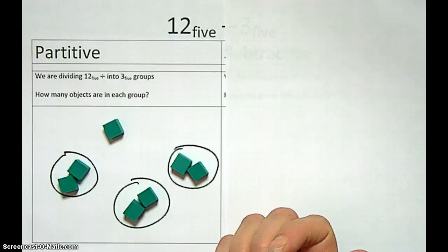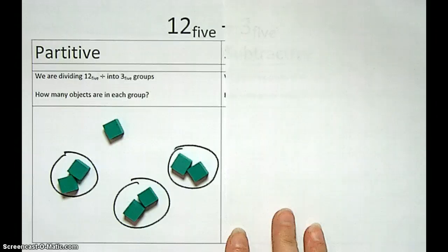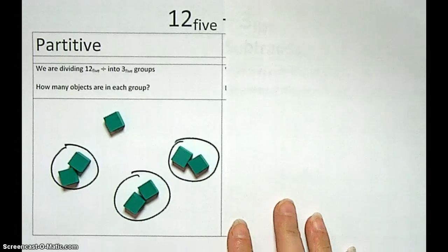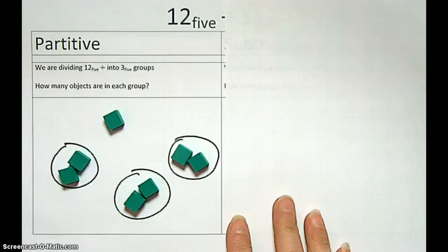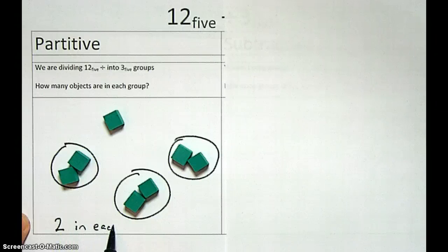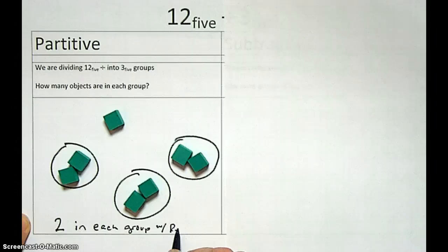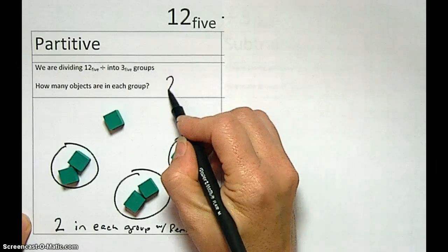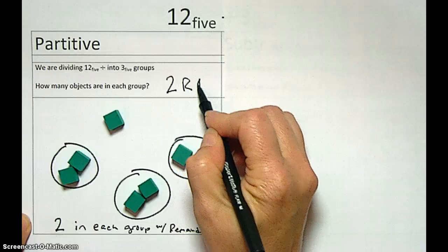Okay, so here we're going to have, I guess I have to move this up a little bit. We're going to have, let's make it fit. As our answer, we're going to have, how many objects are in each group? There are 2 in each group with a remainder of 1. So this is going to be 2, remainder 1.